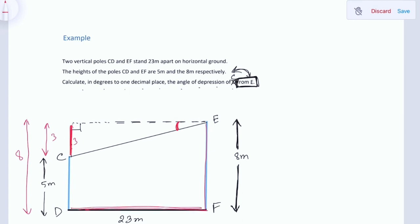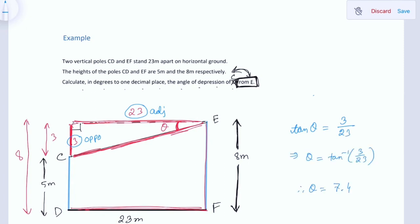Since DF is 23 meters, for this angle theta, this is the opposite side and this is the adjacent side. So we can use tan theta to get the answer. Tan theta equals opposite by adjacent, which gives us 7.4 degrees.